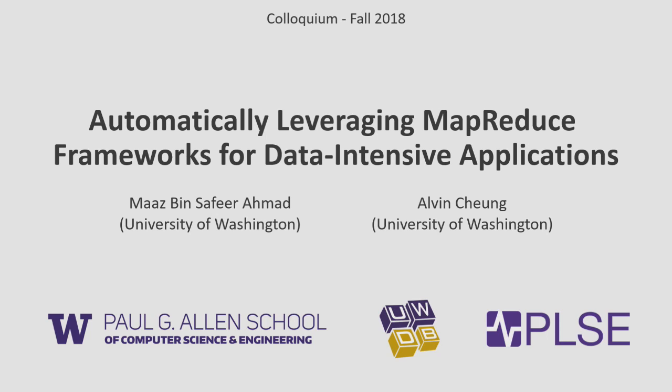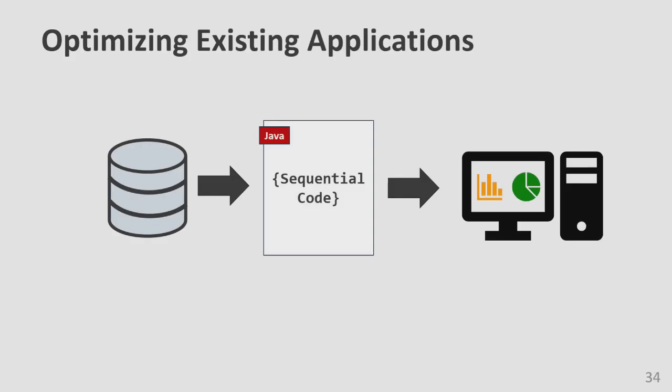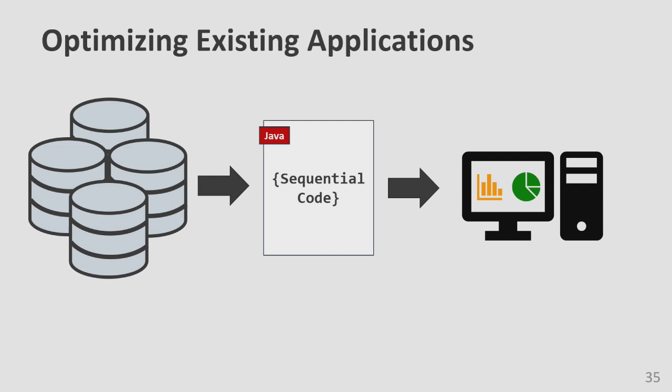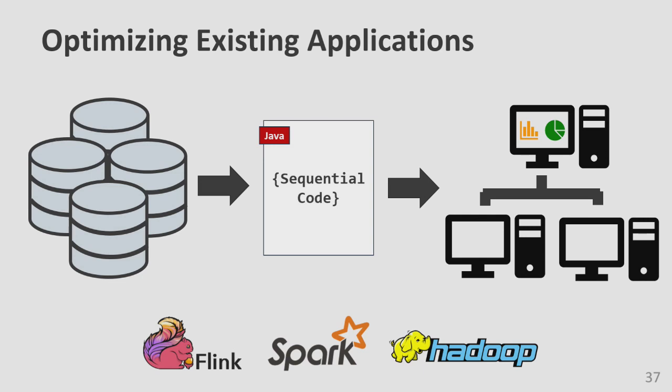Specifically, I'm going to talk about Casper, a tool for generating MapReduce applications from sequential Java implementations. Why do we want to do this translation? Imagine you have a sequential legacy application used for data processing or building visualizations. As data increases, the application may become too slow. You can scale by running it in a parallel and distributed setting — the database community has built tools for this. But for your sequential application to leverage these optimizations, it must be rewritten using the framework's API.